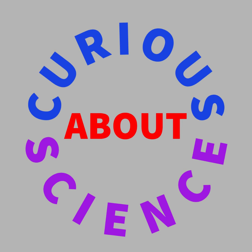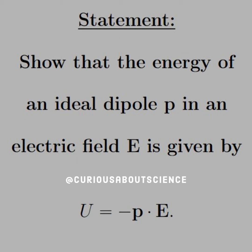All right, back again. The statement reads, show that the energy of an ideal dipole P in an electric field E is given by U equal negative P dot E.